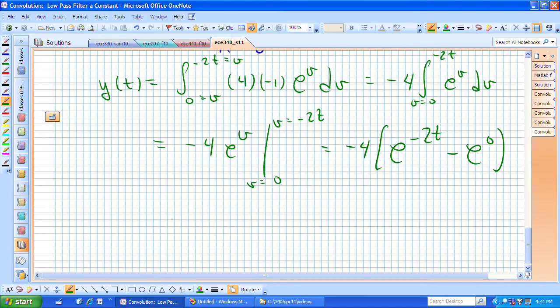I now have minus 4 times e to the minus 2 t minus e to the 0.